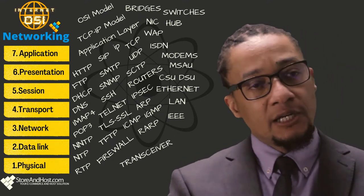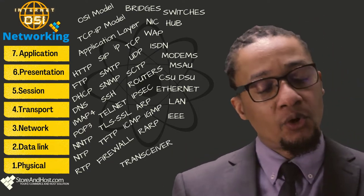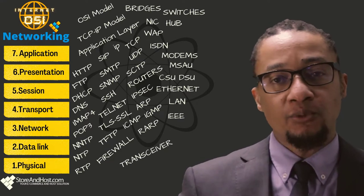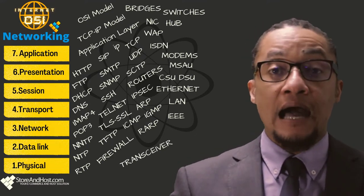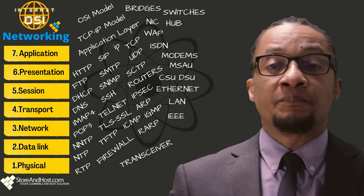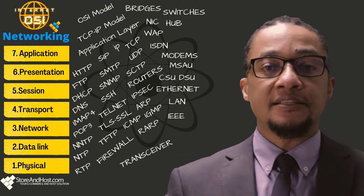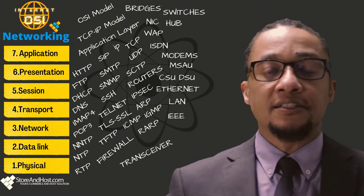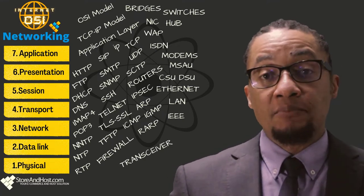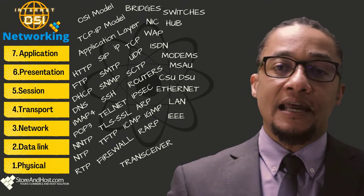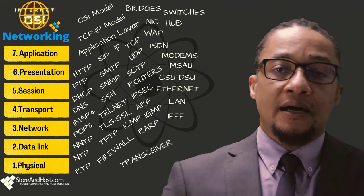The physical layer transmits and receives bits through the network at the electrical level through a wire or medium. It defines protocol standards for sending and receiving data over network devices and acts as an interface between the network and physical devices like hubs and switches. Physical layer standards define optical, electrical, and mechanical characteristics of signals — like voltage levels, voltage fluctuations, physical data rates, transmission distances, and physical connections.